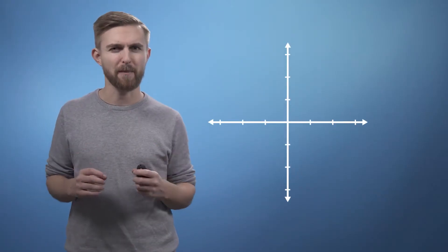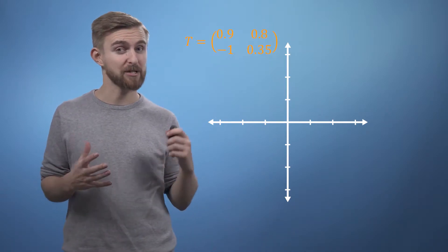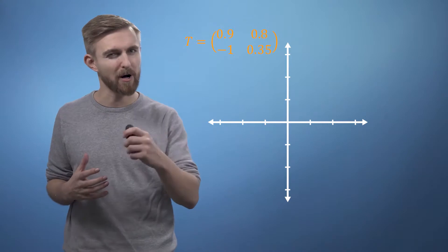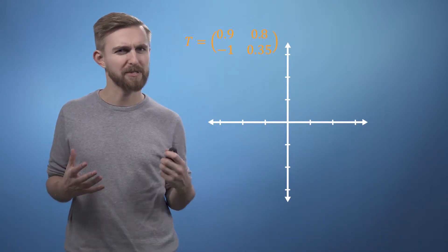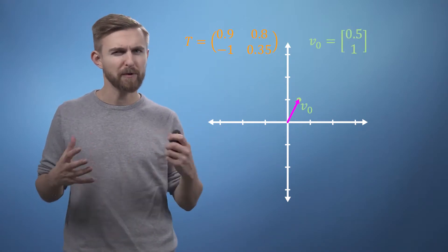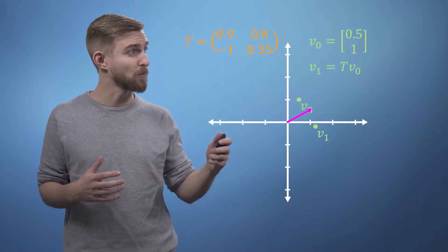Sometimes we need to apply the same matrix multiplication many times. For example, imagine that a transformation matrix T represents the change in location of a particle after a single time step. So we can write that our initial position, described by vector v0, multiplied by the transformation T gives us our new location, v1.